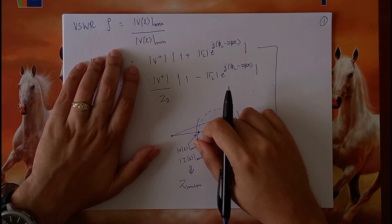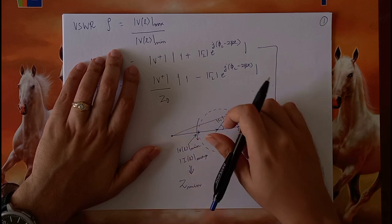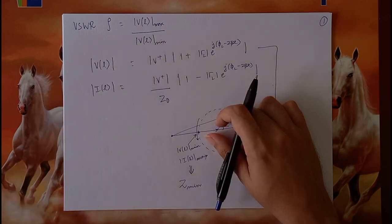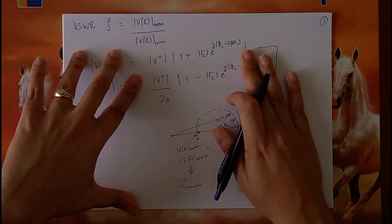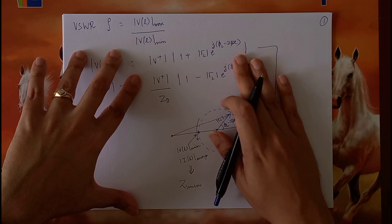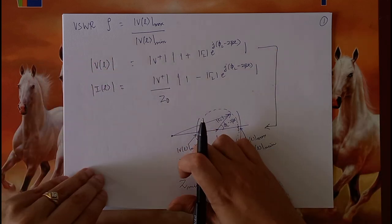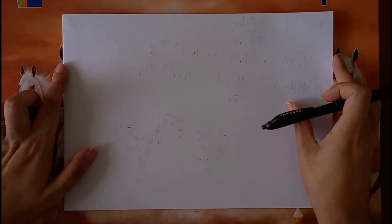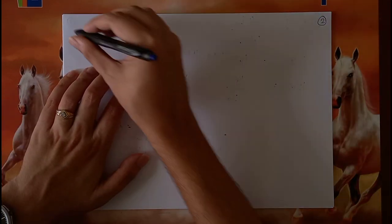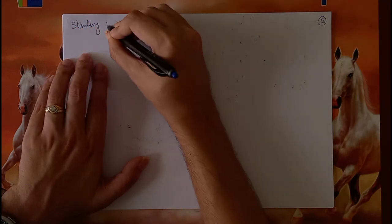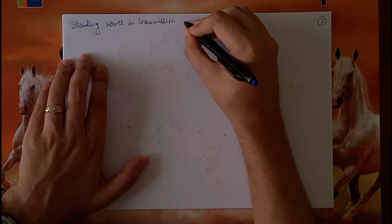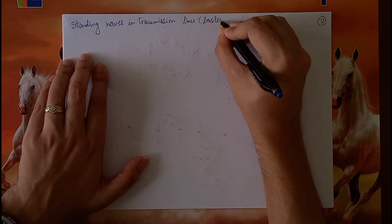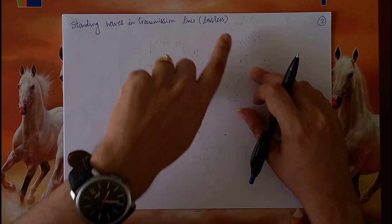Similarly, in a transmission line you have two waves. In general, the magnitudes of the waves need not be equal to each other, so we cannot always say that there will be a standing wave. But there may be phenomena reminiscent of standing waves, and under special conditions in a lossless transmission line, standing waves do definitely happen. Unless mentioned otherwise, we will always assume the line is lossless.